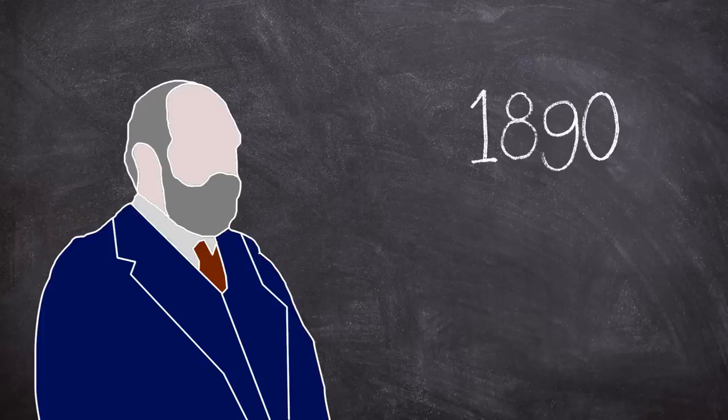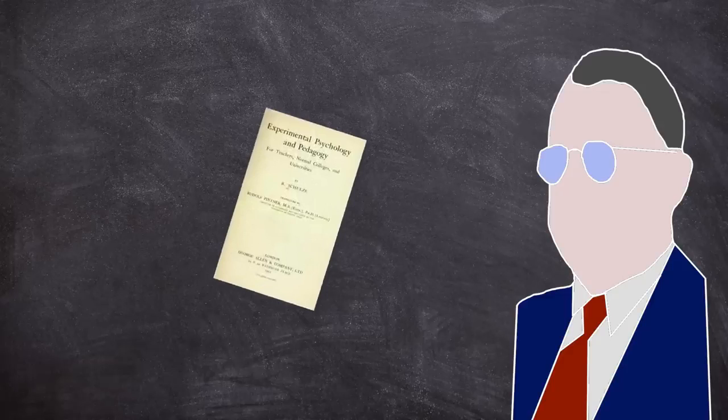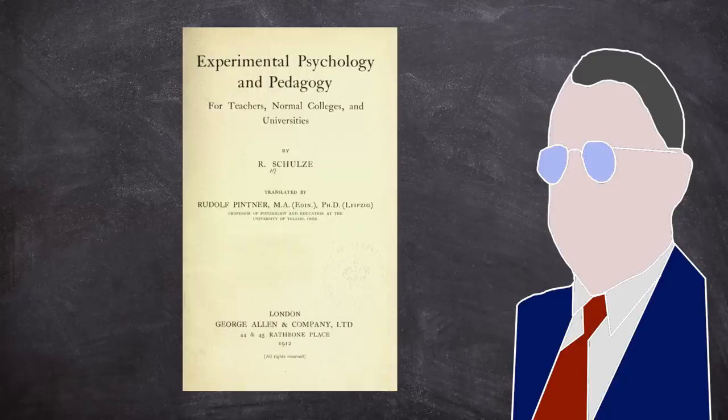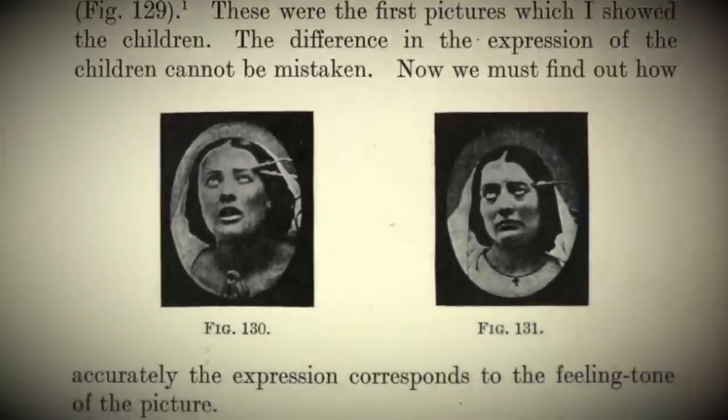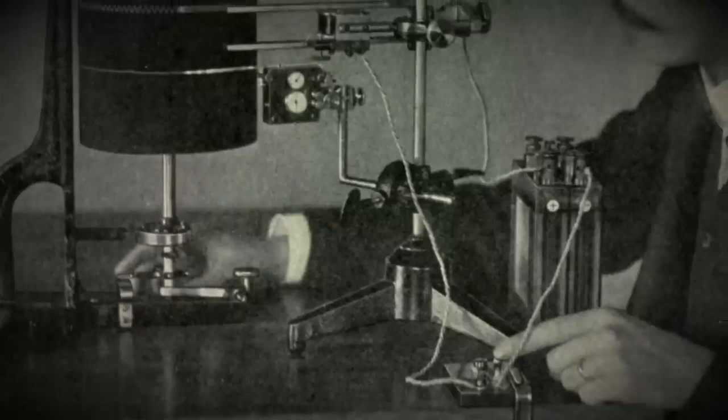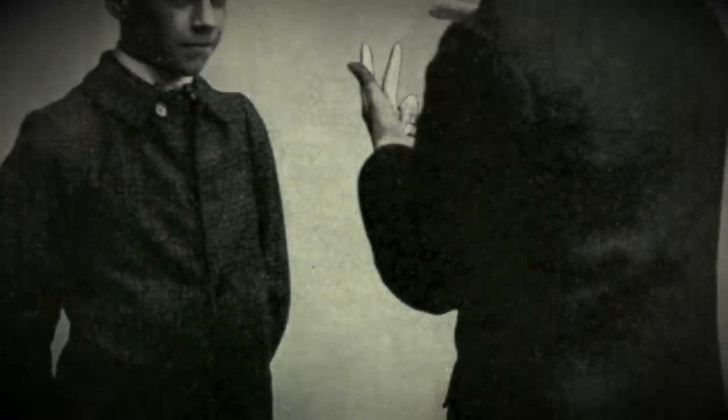One of the other main works that Carnie took inspiration from was R. Schultz's Experimental Psychology and Pedagogy, released translated into English in 1912. This work touches on facial expressions and looks at the links between psychology and education. There are a number of different photographs of subjects' reactions to different stimuli, but it doesn't seek out to find the reason why.